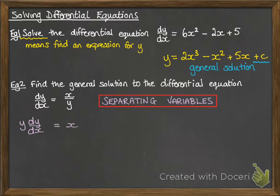So we move the y over to the other side of the equation. And then we integrate both sides with respect to x. Now the dy by dx integrated with respect to x can just be written as dy.